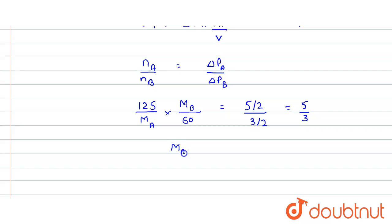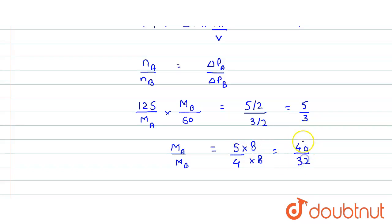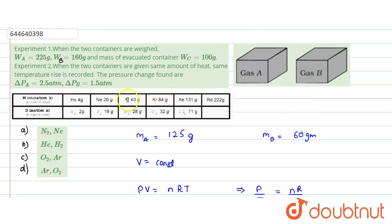Cross-multiplying gives MA/MB = 5/4. To find actual molecular masses matching this ratio, multiplying by 8 gives 40 in the numerator and 32 in the denominator. This matches argon (molecular mass 40) and oxygen (molecular mass 32). Indeed, 40/32 gives the ratio 5:4, confirming the gases are argon and oxygen. Therefore option D is the correct answer.